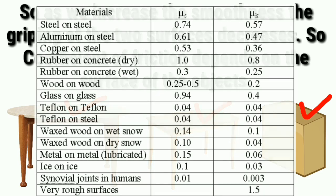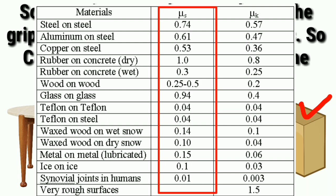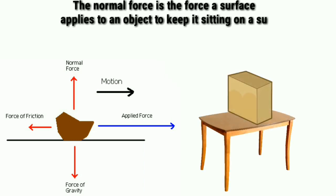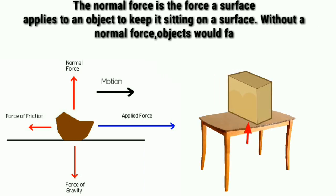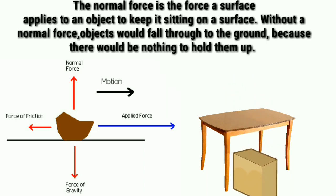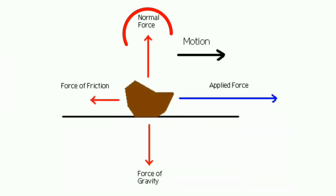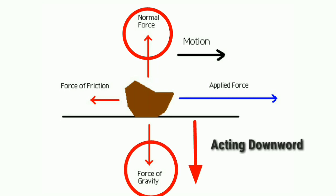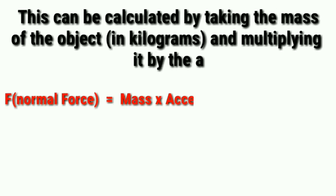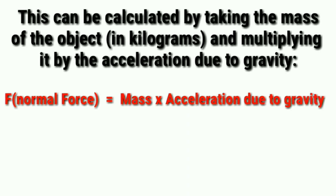Various objects have different coefficients of friction. The normal force is the force a surface applies to an object to keep it sitting on the surface — without a normal force, objects would fall through to the ground. On a flat surface, this normal force is equal to the force of gravity acting down on the object, calculated by taking the mass of the object in kilograms and multiplying it by the acceleration due to gravity.